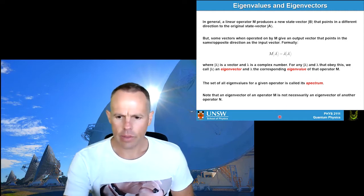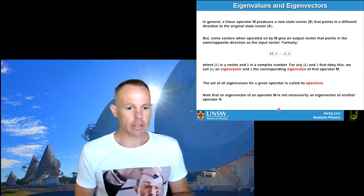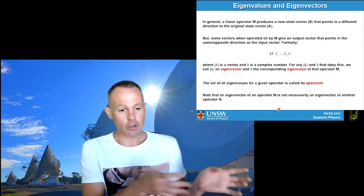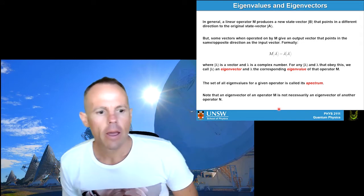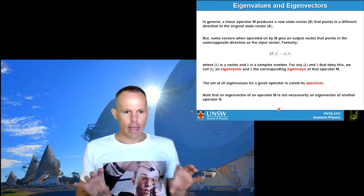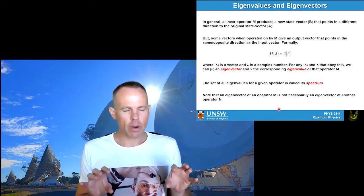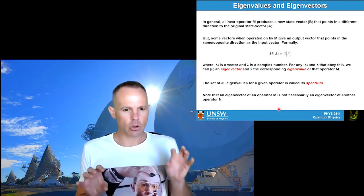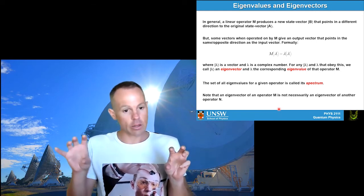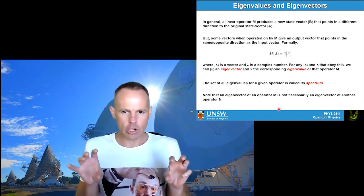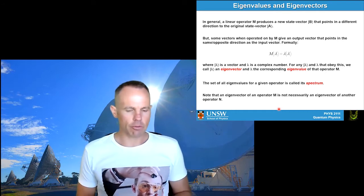That's matrix multiplication. An operator is basically just a matrix times a vector, which gives you a new vector. One thing we really care about for operators — particularly for any operator connected to an observable — is what the eigenvalues and eigenvectors are.